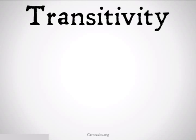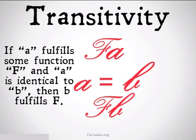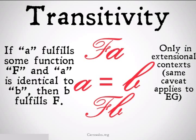Finally, we have transitivity. This is the cool and kind of spooky one. If you have A as an F, and A is identical to B, then B is an F as well. If A fulfills some function F, and A is identical to B, then B fulfills F. This seems to make sense. For example, Mark Twain wrote Huckleberry Finn, and Samuel Clemens is identical to Mark Twain, it seems that Samuel Clemens also wrote Huckleberry Finn.